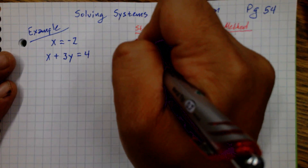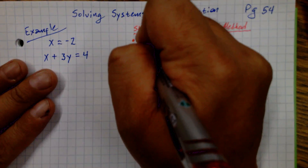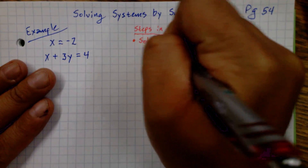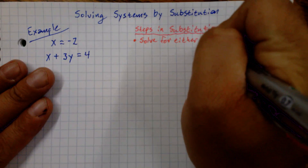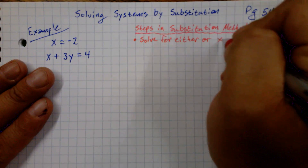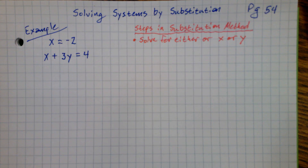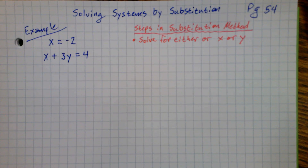The first step is to solve for either x or y. That means we want to get one of our equations so that the x variable or the y variable is all by itself. Fortunately for us, our first equation is already like that, so we don't have to worry about that step.